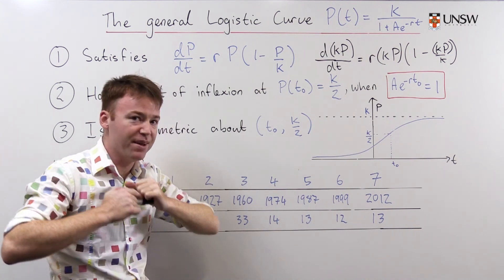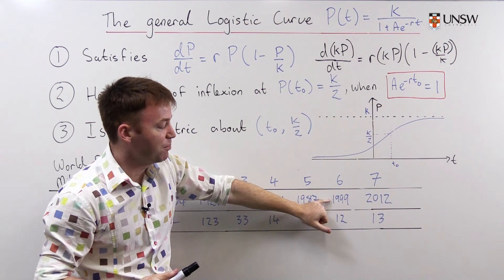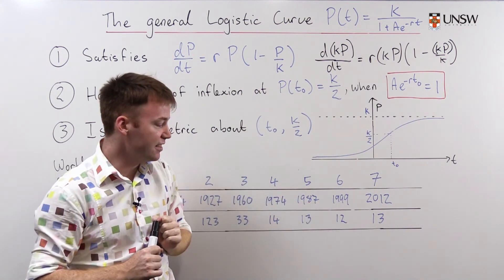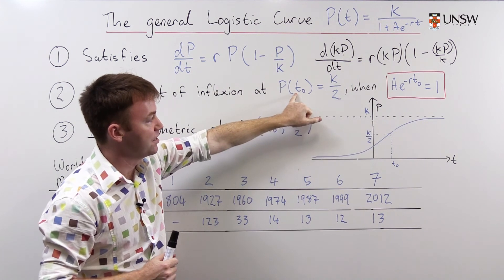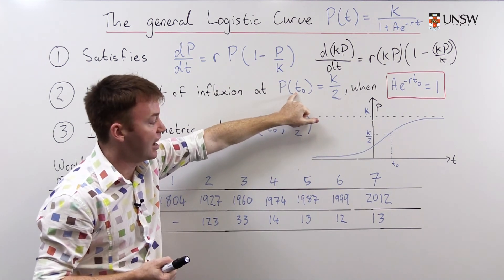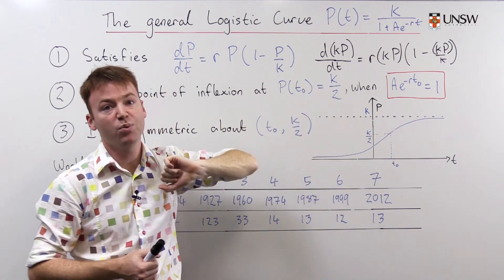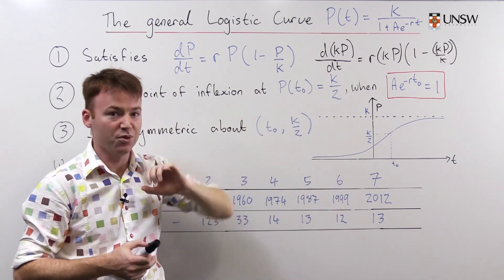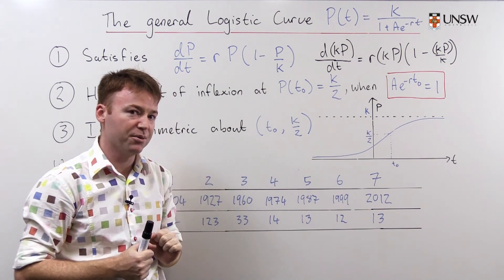That tells us many wonderful things about world population. If we know that the point of inflection is about 1999, then we know that T0 is about 1999, and there's six billion people on the earth at that time. So k must be 12. So the future possible population of the world is 12 billion people.